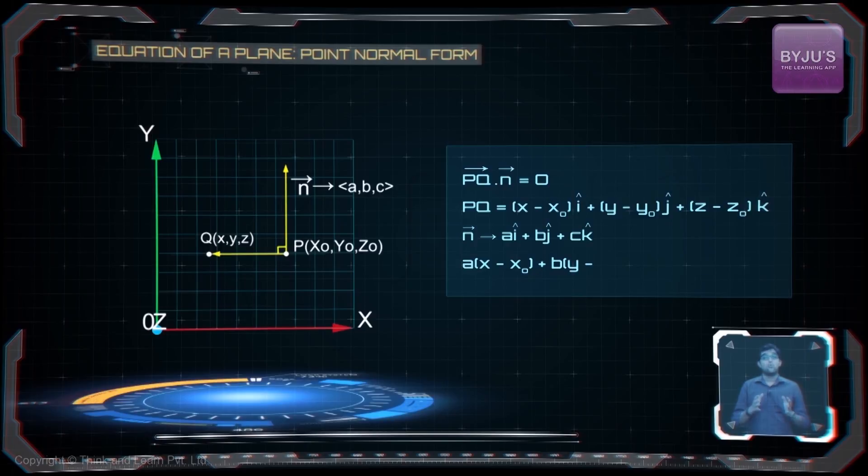Now this is the point normal form equation of a plane.